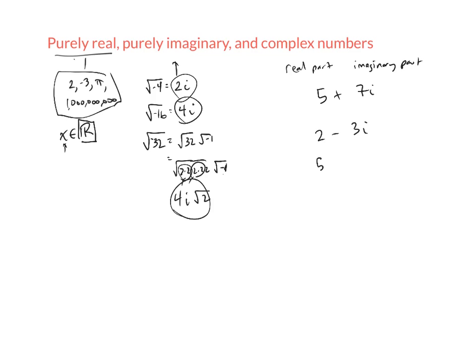Now, 5 plus 0i, meaning a purely real number like 5, is a complex number. And 0 plus 7i, which is 7i, that's a purely imaginary number. But all of these are complex numbers because they have this real part and this imaginary part.